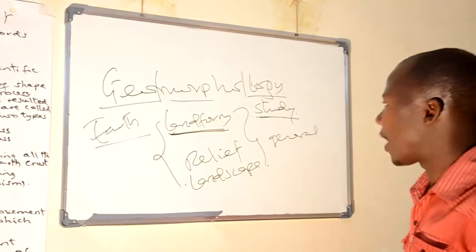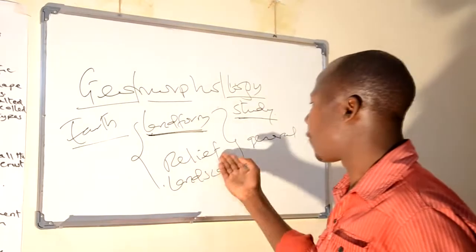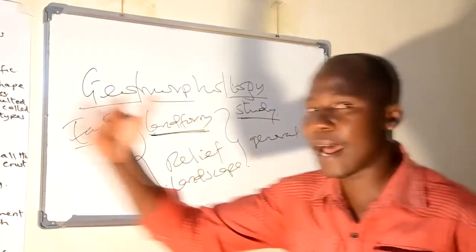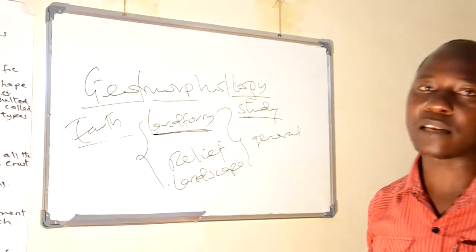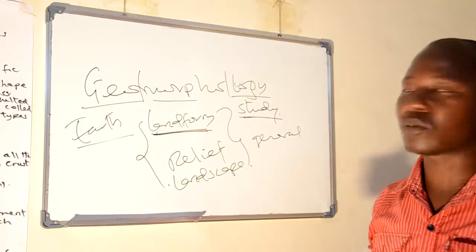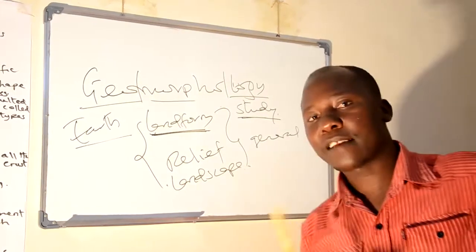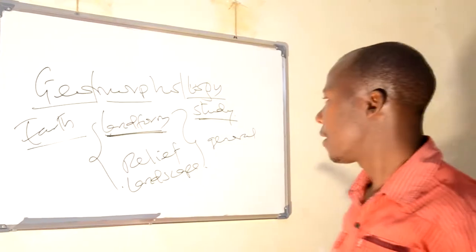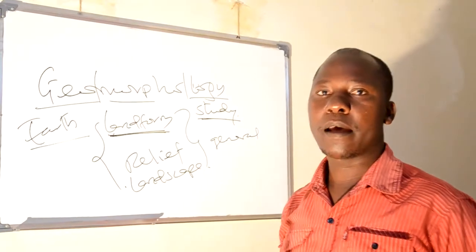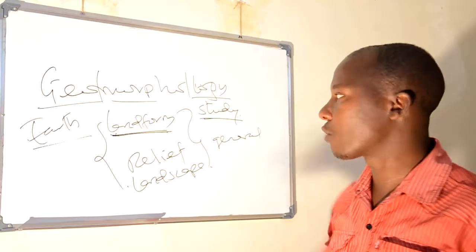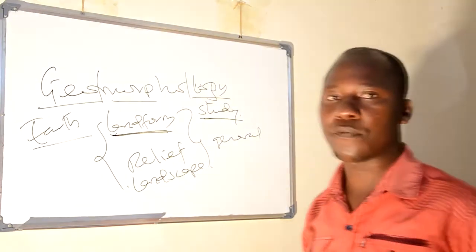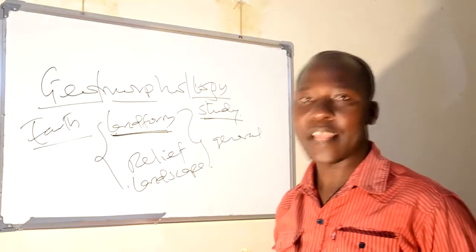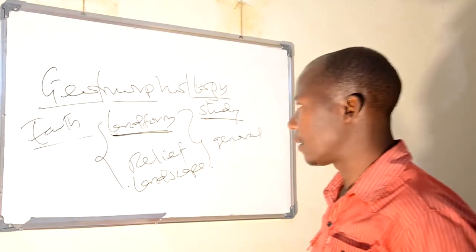Therefore, whenever we talk about landform, relief, or landscape, this is the general appearance of the earth surface, either highland or lowland. You can determine that there are different features which can take place in highland areas: plateau, hill, mountains, escarpment, and others. Even in lowlands, for instance, floodplains, levees, and others of the same kind.